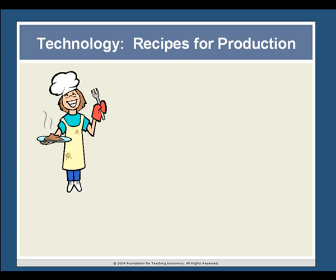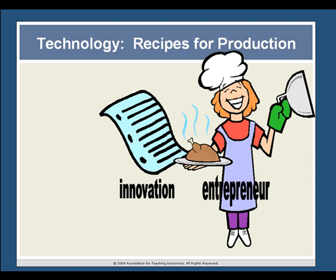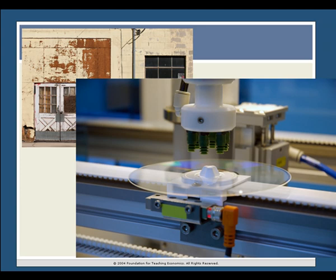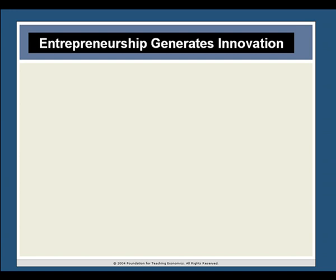Romer writes: 'To create valuable final products, we mix expensive ingredients together according to a recipe. If economic growth could be achieved only by doing more and more of the same kind of cooking, we would eventually run out of raw materials. Human history teaches us however that economic growth springs from better recipes, not just more cooking.' If we think of our cooks as entrepreneurs and their better recipes as innovation, we have an apt metaphorical explanation for the wealth of western developed nations. The history of the market economy since the Industrial Revolution is the story of worn, rusted, archaic production recipes being continually supplanted by new technology — shinier, faster, more prolific, more amazing recipes for production. This lesson focuses on how two institutions — markets and entrepreneurship — generate innovation.